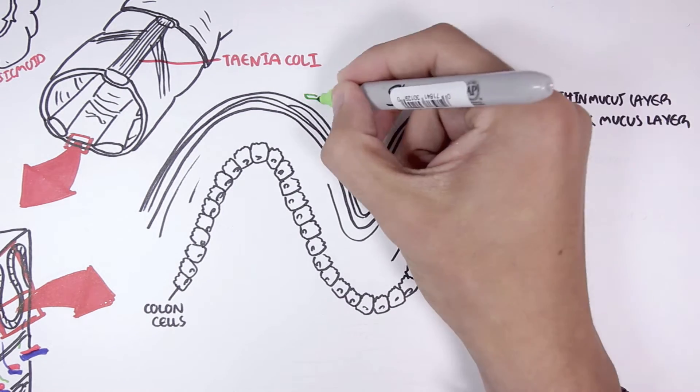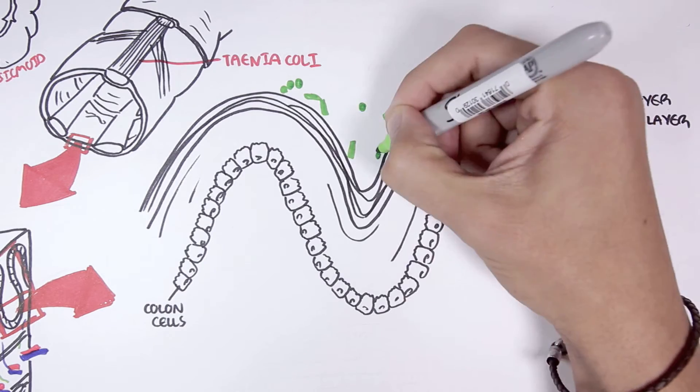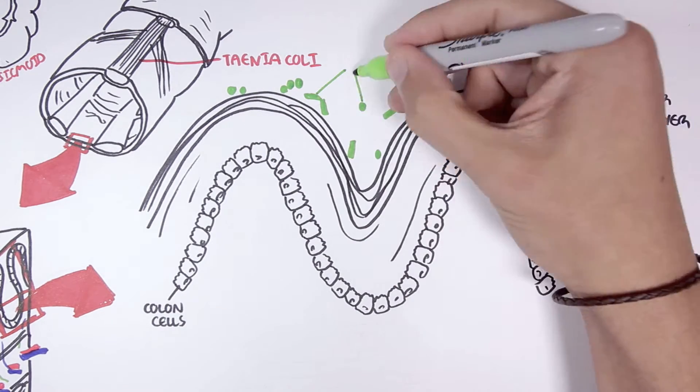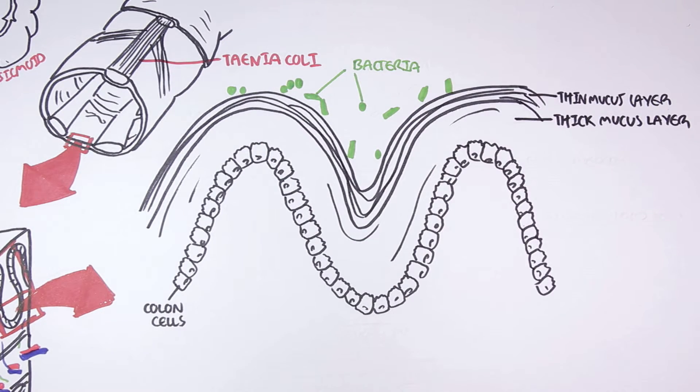Residing above the mucus and within the lumen are bacteria. These bacteria are called the gut microbiota. Humans and their gut microbiota have a symbiotic and mutualistic relationship.